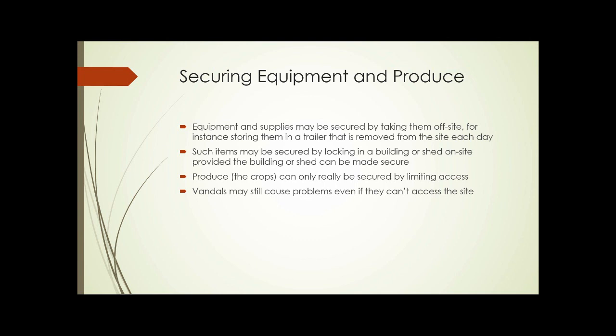So how can we secure our equipment and our produce? Equipment and supplies might be secured by taking them off site — for instance, storing them in a trailer and then removing that trailer from the site each night to a more secure location. You could also secure those items by locking them in a building or shed on site, provided that building or shed can be made secure. The crops you're growing can only really be secured by limiting access to the site — you can't remove them each day and bring them back, so you have to keep people off the site.